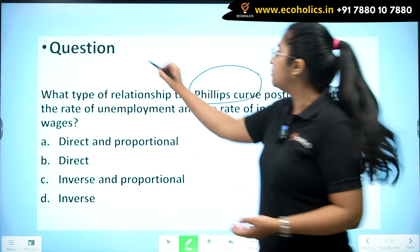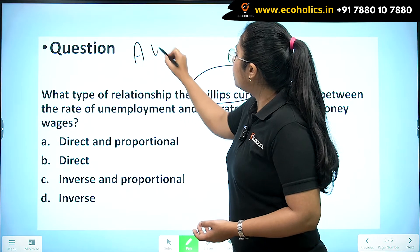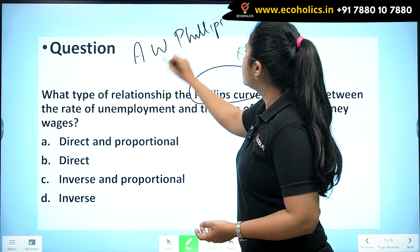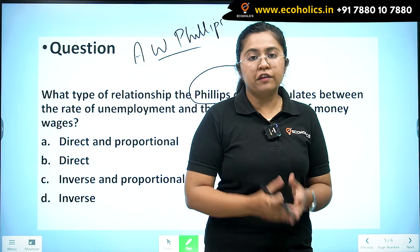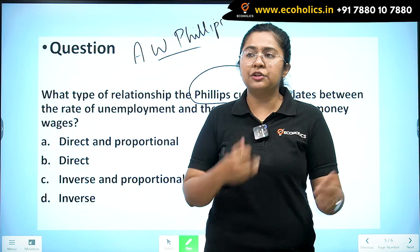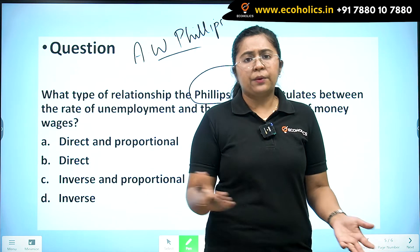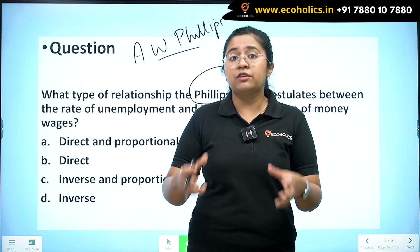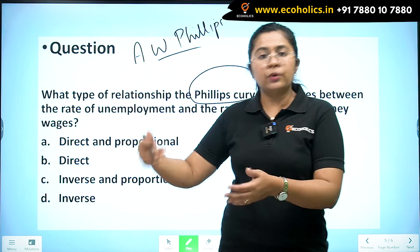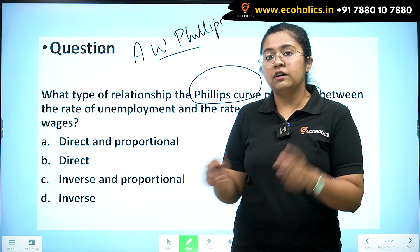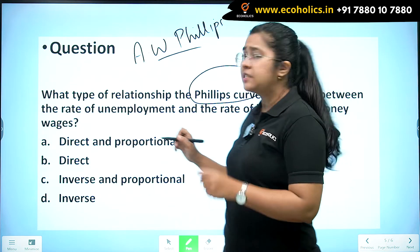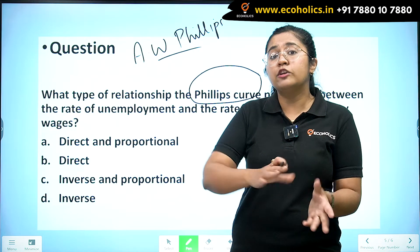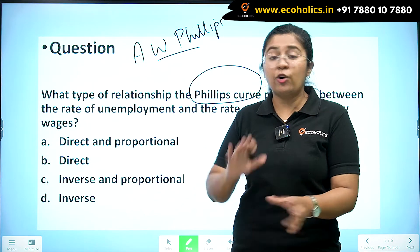Who introduced the Phillips curve? A.W. Phillips introduced the concept of the Phillips curve, majorly during the 1970s. But gradually, due to the concept of stagflation that arose during that time and later, the Phillips curve was questioned by various other economists and then highly moderated and changed.